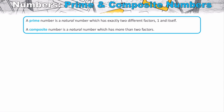A prime number is a natural number — and that's an important word — which has exactly two different factors: one and itself. A natural number is the counting numbers: 1, 2, 3, 4 — all whole numbers greater than zero. It doesn't include zero or negative numbers. A prime number has exactly two different factors.